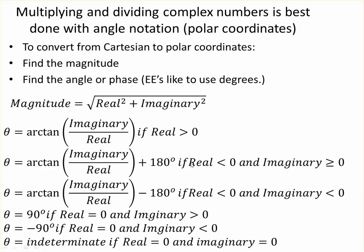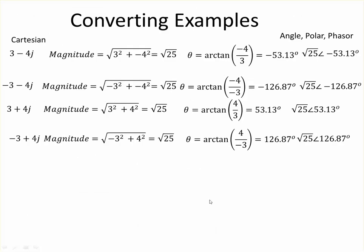Sometimes you have to adjust it by 180 or minus 180 or 90 or minus 90, depending on what quadrant that you're in. Then a quick example, we have all four quadrants represented by four imaginary numbers. You can go through the notes and just verify that for yourself.